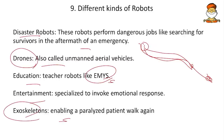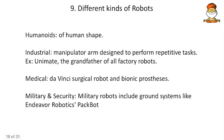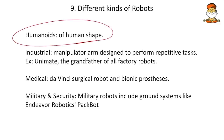The exoskeleton robot helps paralyzed persons walk — wearing these exoskeletons provides the muscular strength to walk again. Humanoids are human-shaped robots. Industrial applications include the manipulator arm — any arm which fixes, cuts, or moves things. The Unimate is the first manipulator robot, which marked the beginning of industrial robotics, and now robotics has become a revolution.